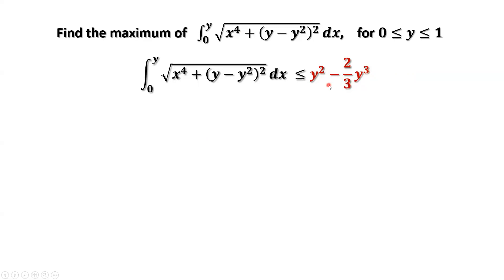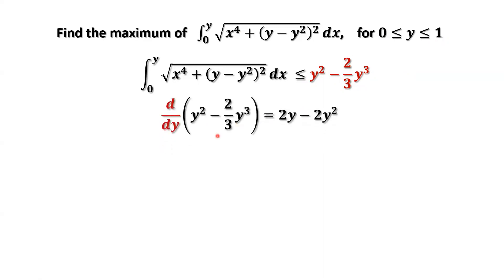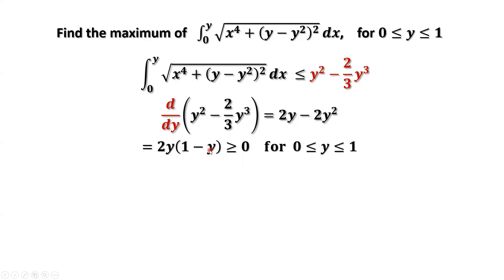Here y is a parameter between 0 and 1. So how do we find the maximum value of the right-hand side? We use basic calculus: taking the first-order derivative, we get 2y − 2y². Factoring out 2y, we have 2y(1 − y). Because y is between 0 and 1, y ≥ 0 and (1 − y) ≥ 0, therefore this product is ≥ 0.